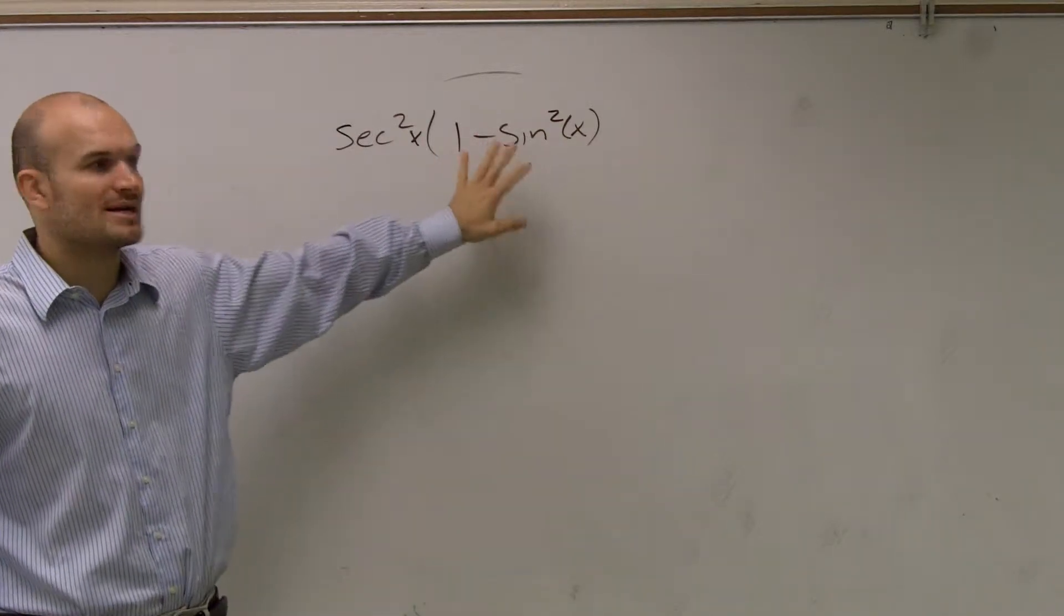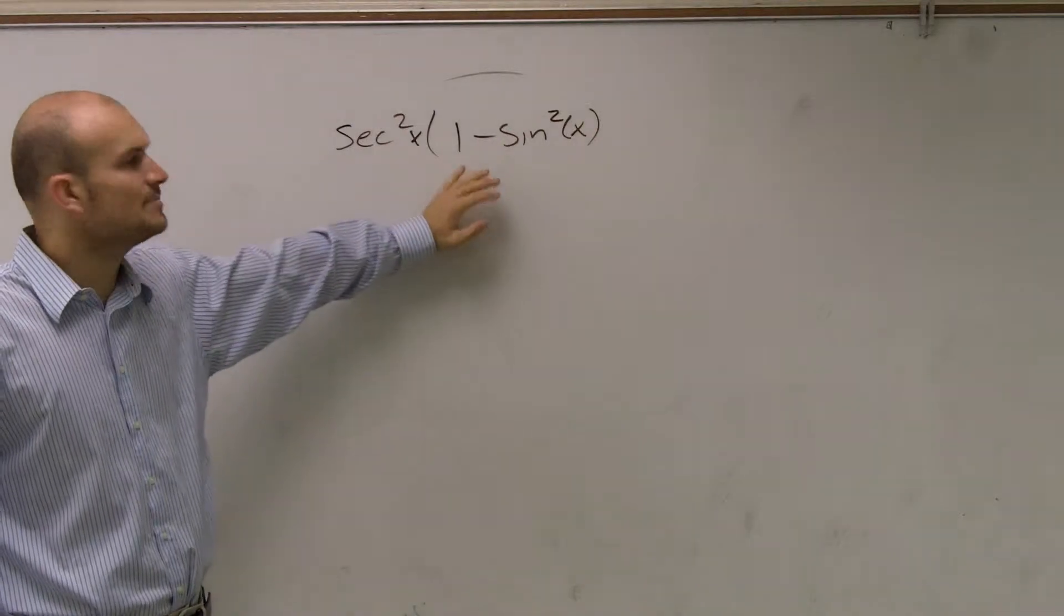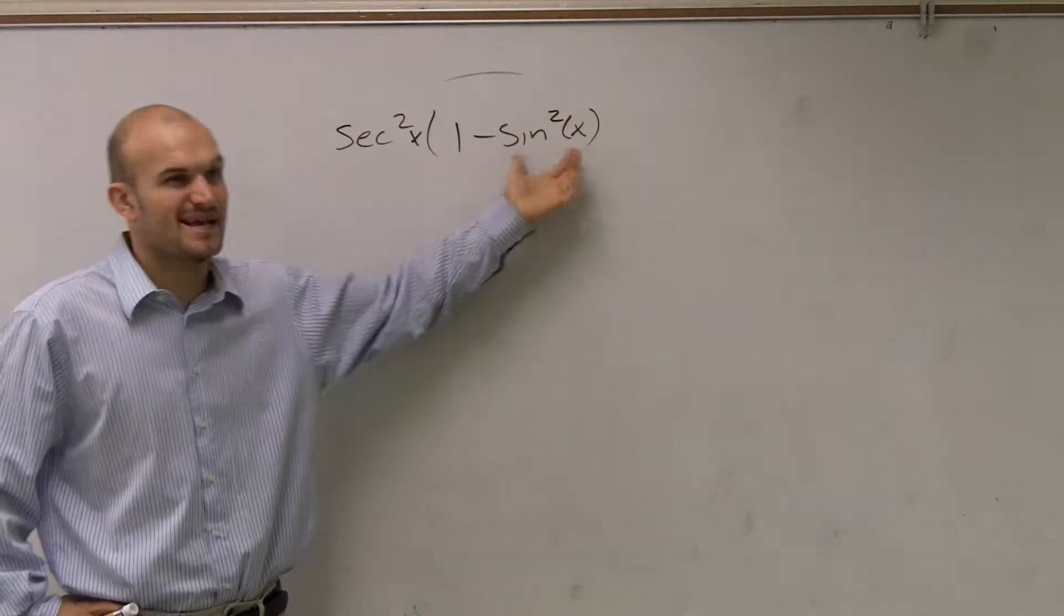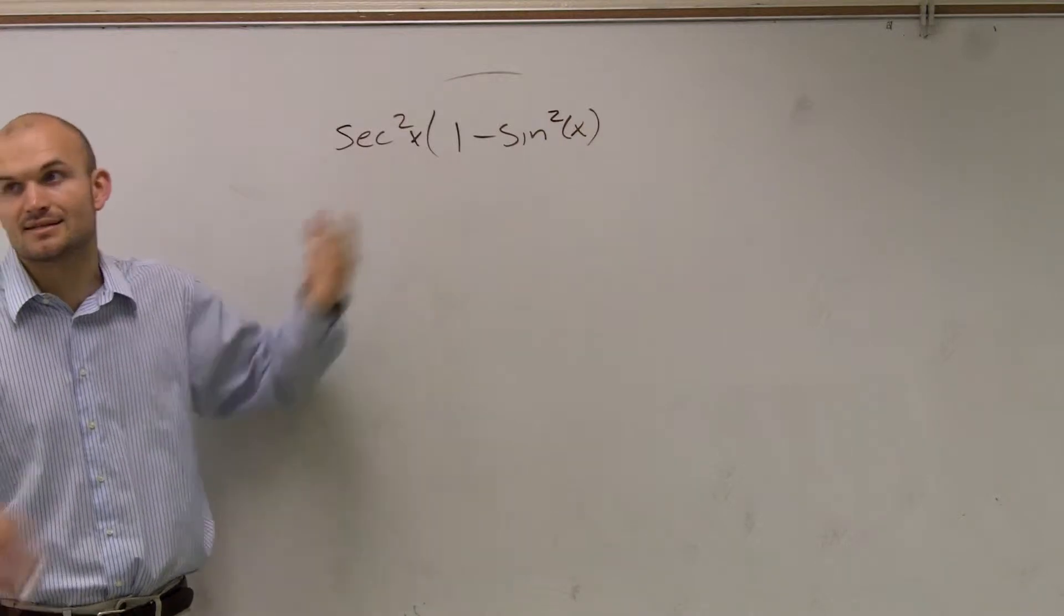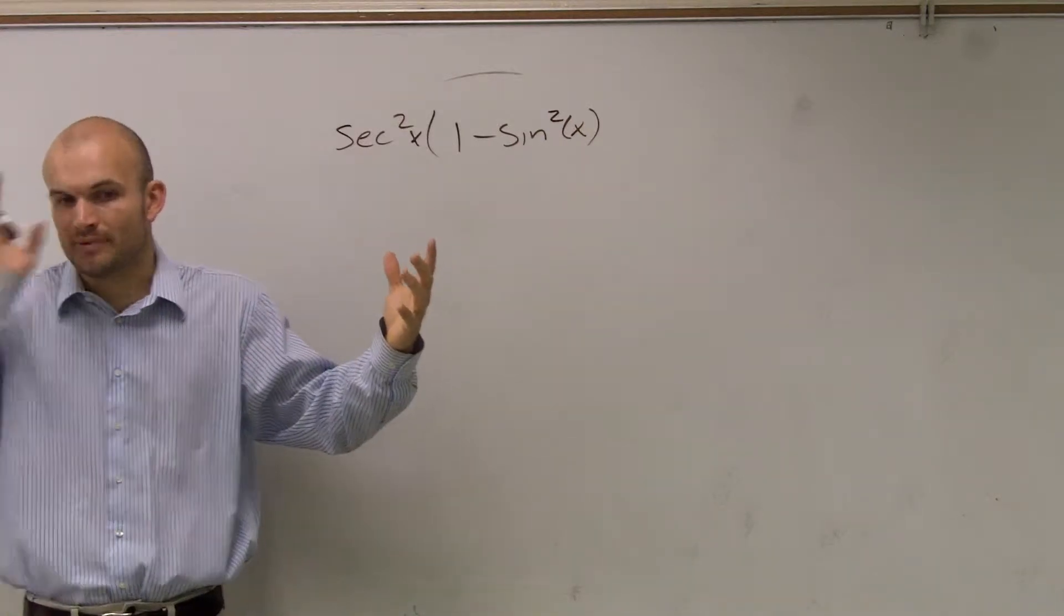I'm going to transform the 1 minus sine squared simply for the fact that it's going to make it simpler, right? If I was going to transform it to the secant, I'm going to get an expansion problem. And also,